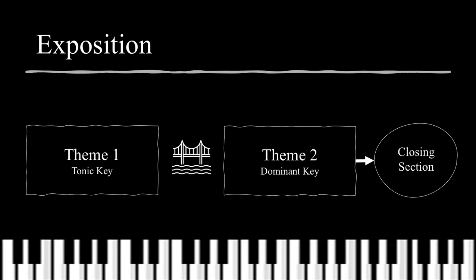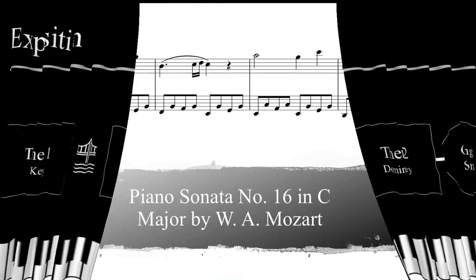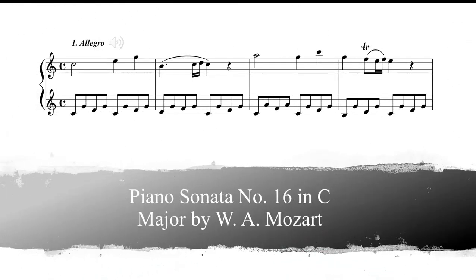Here is the first four measures of Piano Sonata No. 16 by Wolfgang Amadeus Mozart. This playful tune is an example of a first theme. This theme begins with an arpeggiation of a C major chord, firmly establishing the tonic in C major. The left hand further establishes the key through Alberti bass C major chords.